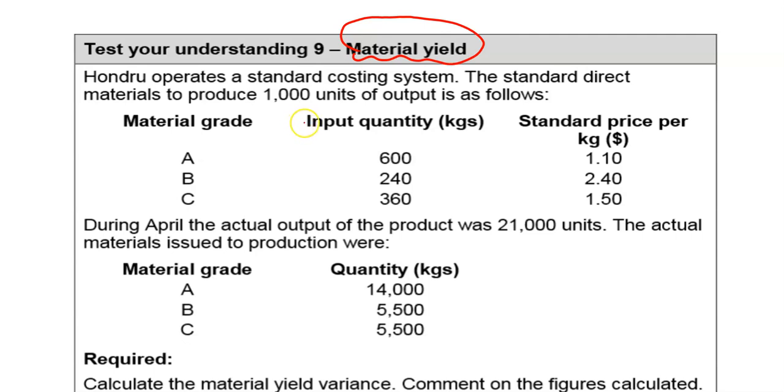So we expect, it's really like your classic efficiency variance, we expect you to use 12 kilograms to produce a thousand units of output. That's ultimately what we're saying here. We expect a thousand units of output to come out, it says a thousand units of output to come out of twelve hundred kilograms.